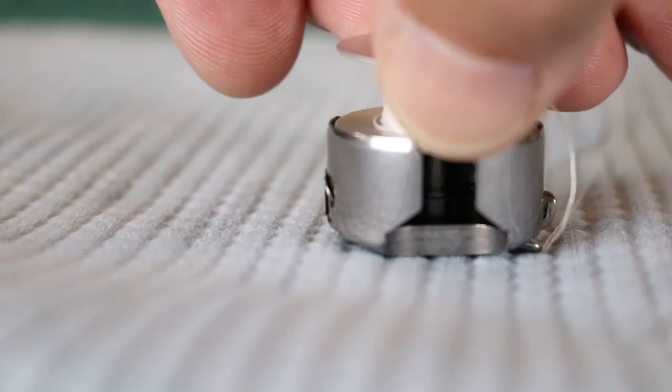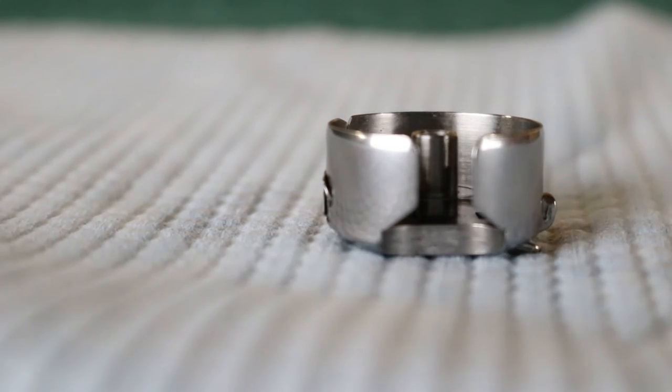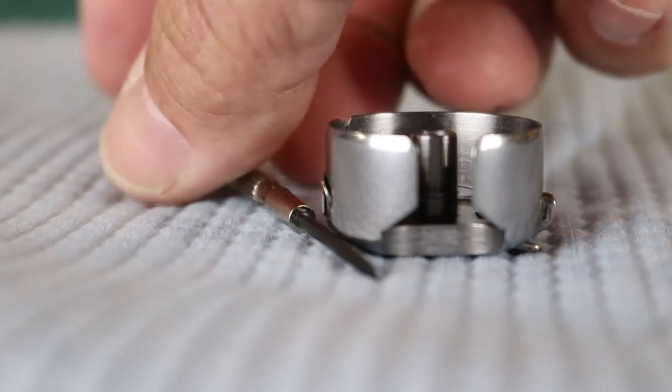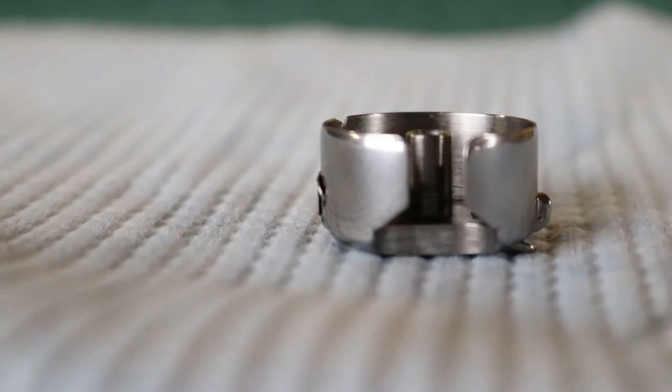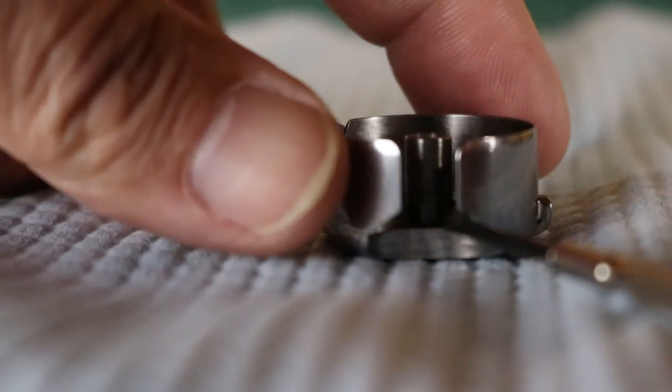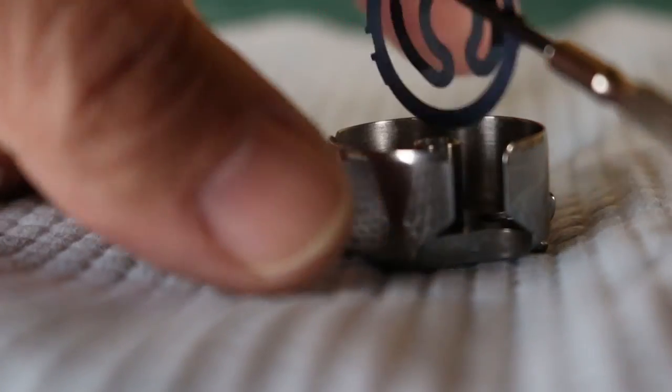To get started, let's pull the bobbin out of the case and we're going to need a sharp tool. Something like a precision screwdriver or a toothpick will work just fine. You need to put it underneath the bobbin spring and gently pull up and the spring will come right out.